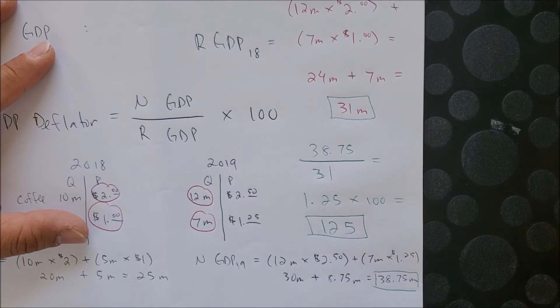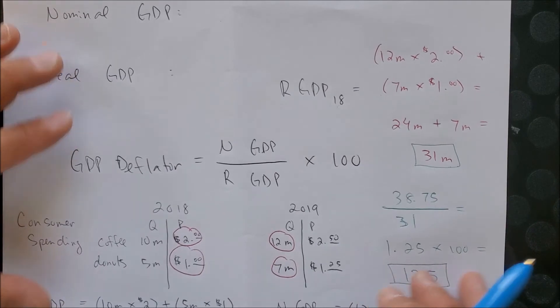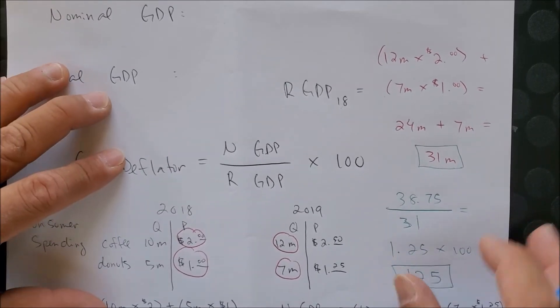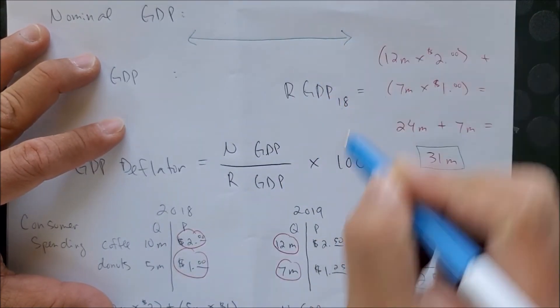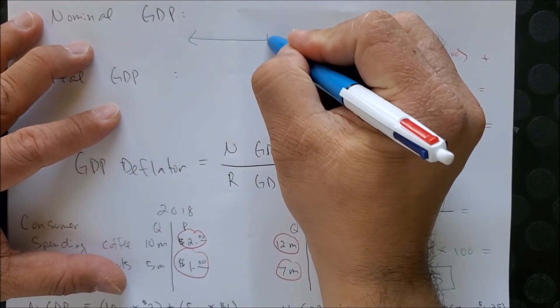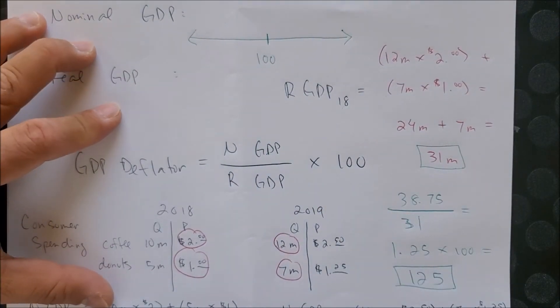So now the question is what does 125 mean? Well, if we look at a number line, we can then see what 125 means. Here we have a number line, and in between we have 100.